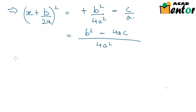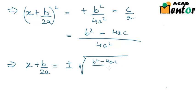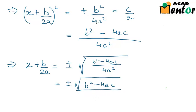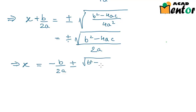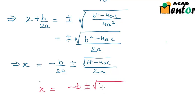Now it is easy to solve for X. We get X + B/2A = ± √[(B² − 4AC) / 4A²], which equals ± √(B² − 4AC) / 2A. Therefore X = −B/2A ± √(B² − 4AC) / 2A, which gives X = [−B ± √(B² − 4AC)] / 2A.